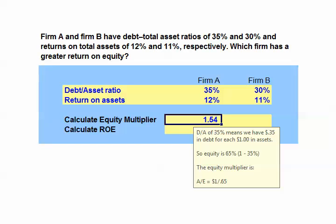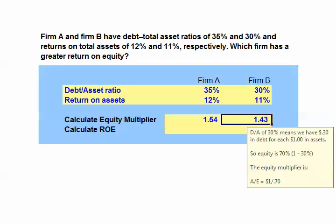For Firm B, the debt to asset ratio is 30%. This means the percentage of equity is 70%, and our equity multiplier will be $1 divided by 0.7, or 1.43.